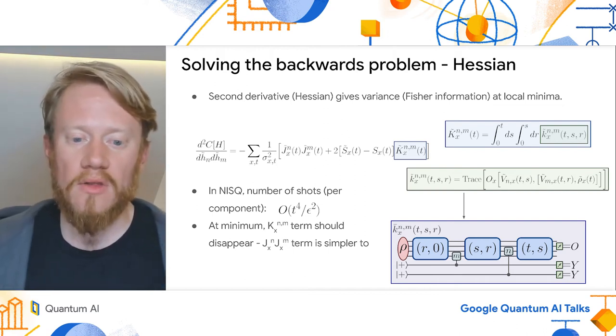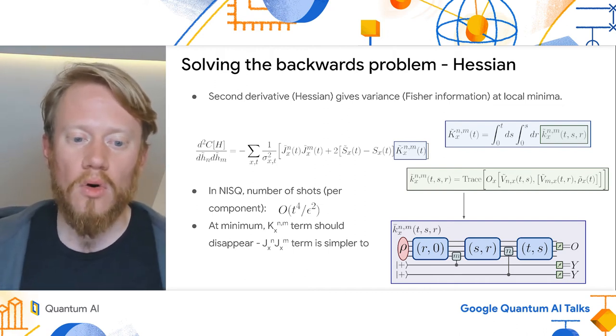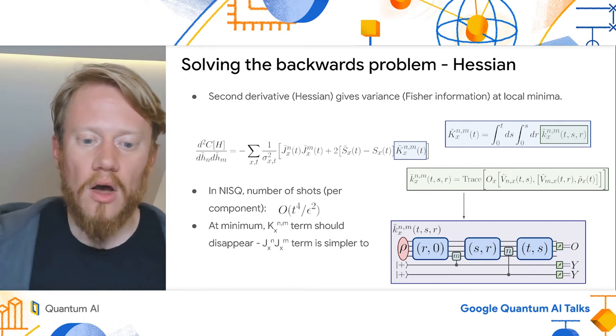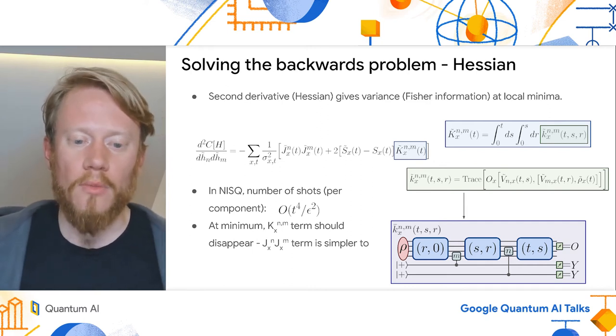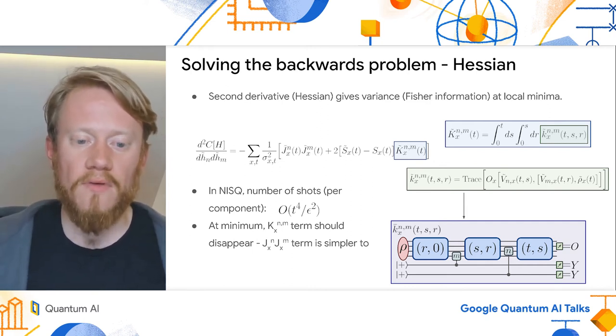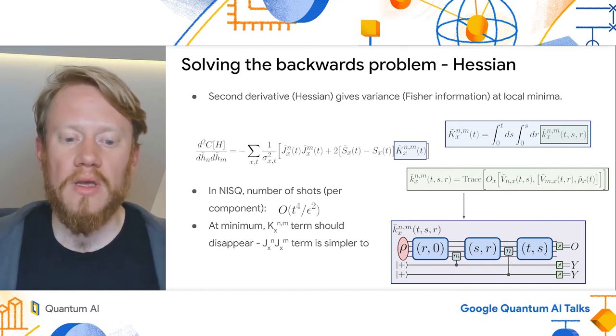Again, this should be a lower bound as capital K scales at worst as order t-squared. However, I'll note that at our global optimum, which is at the point we are concerned about for the Fisher information, the second term in the Hessian disappears.